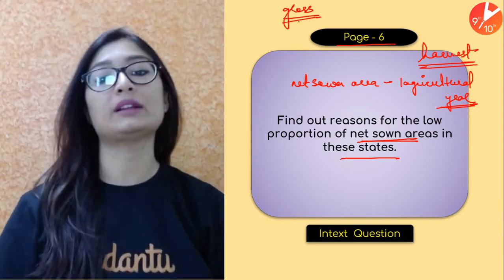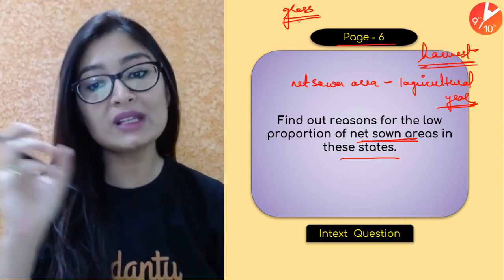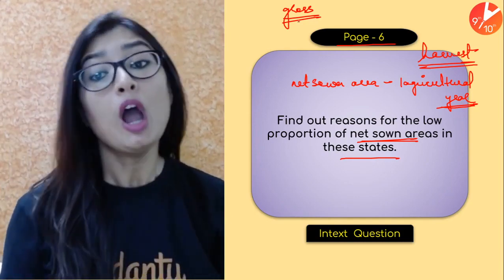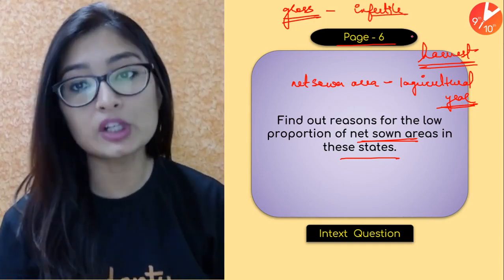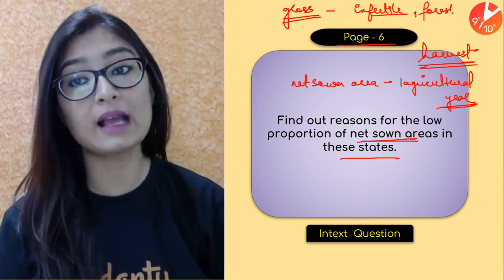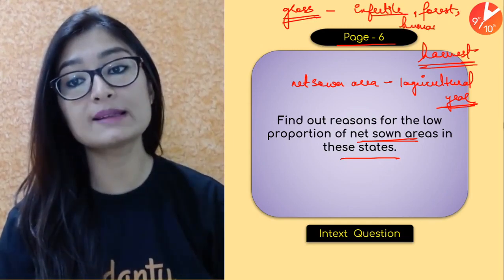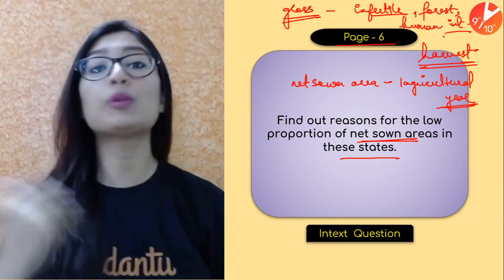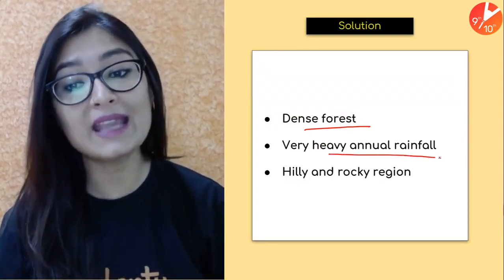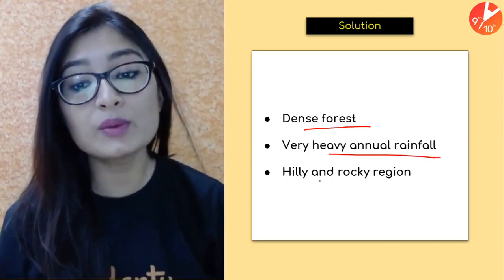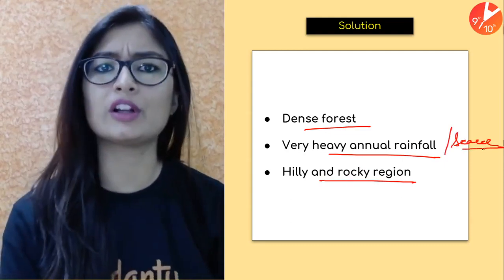The land may be infertile and not able to support agriculture, or there is more forest cover. Because the forest is dense, there is no place for agricultural purposes. It could also be because of very heavy annual rainfall, hilly or rocky terrain, or scarce cultivable land. So there is only a little bit of cultivation possible in these regions.